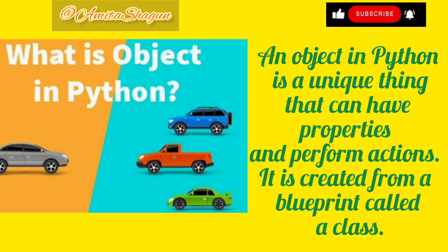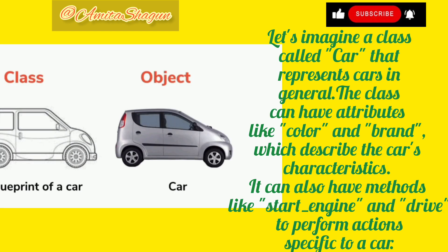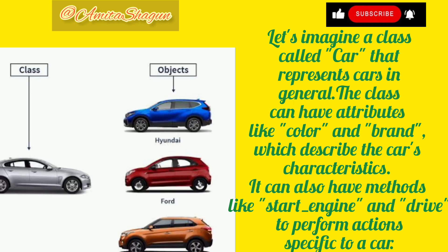An object in Python is a unique thing that can have properties and perform actions. It is created from a blueprint called a class. Let's imagine a class called Car that represents cars in general. The class can have attributes like color and brand, which describe the car's characteristics.